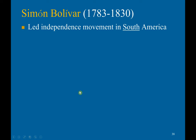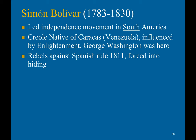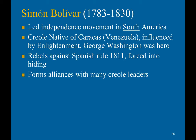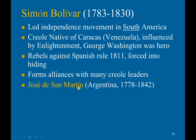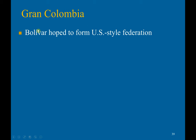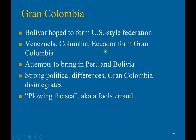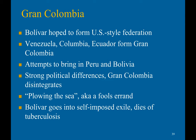Simón Bolívar led the independence movement in South America. He was a creole native of Caracas, influenced by Enlightenment ideals, and considered George Washington a hero. He rebelled against Spanish rule in 1811 but was forced into hiding. He formed alliances with creole leaders such as José de San Martín in Argentina and Bernardo O'Higgins in Chile. As a result of his actions, Spanish rule was destroyed in South America by 1825. Bolívar hoped to form a U.S.-style confederation called Gran Colombia comprising Venezuela, Colombia, and Ecuador, and attempted to bring in Peru and Bolivia. However, strong political differences caused Gran Colombia to disintegrate — basically like plowing the sea, a fool's errand. Bolívar was deeply humiliated and went into self-imposed exile, where he died of tuberculosis.